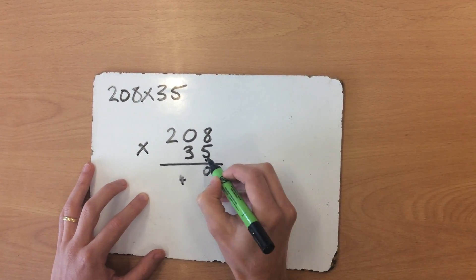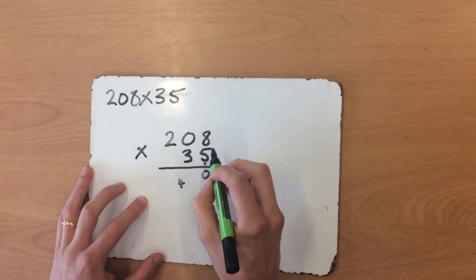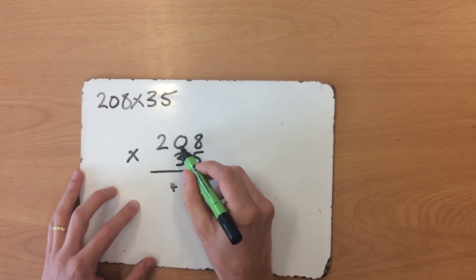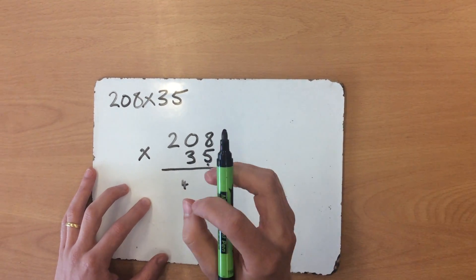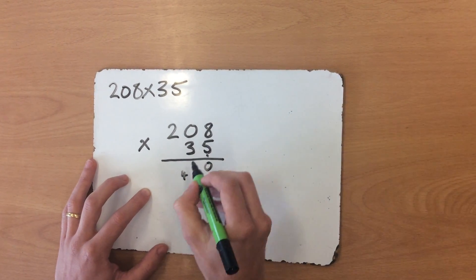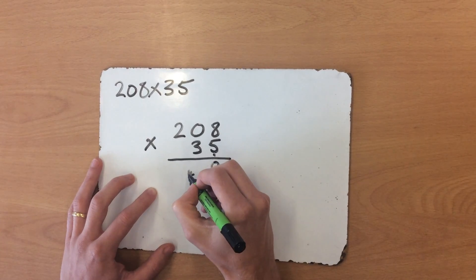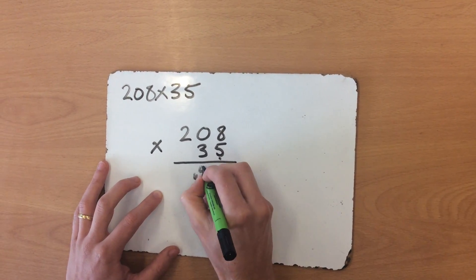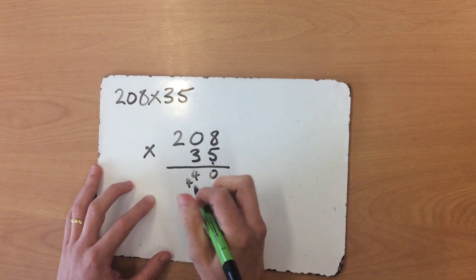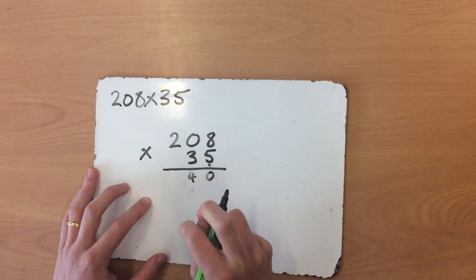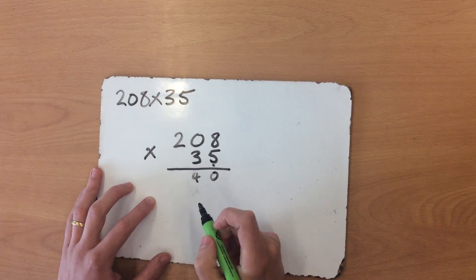Now I'm still working with the 5 in my ones column. 5 multiplied by 0—well that's obviously 0, because anything multiplied by 0 will always be 0. But don't forget to add that 4. 5 multiplied by 0 is 0, plus 4 gives me 4. I'm going to rub that number out because I've used it now, but you can cross it off if you want to. Make sure you get rid of it so we don't get confused when we add it later on.